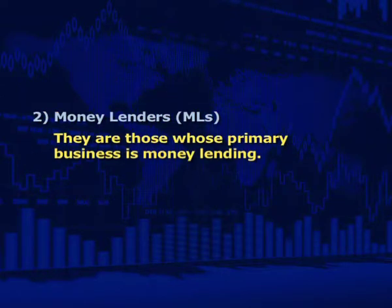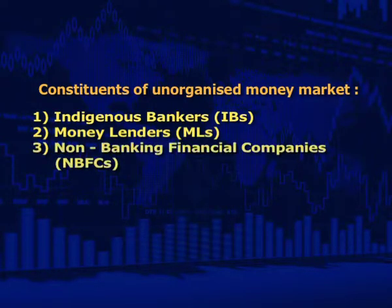Second is money lenders. They are those whose primary business is money lending. Money lending in India is very popular both in urban and rural areas. Interest rates are generally high, and large amounts of loans are given for unproductive purposes. The operations of money lenders are prompt, informal, and flexible. The borrowers are mostly poor farmers, artisans, petty traders, and manual workers. Over the years the role of money lenders has declined due to the growing importance of the organized banking sector.